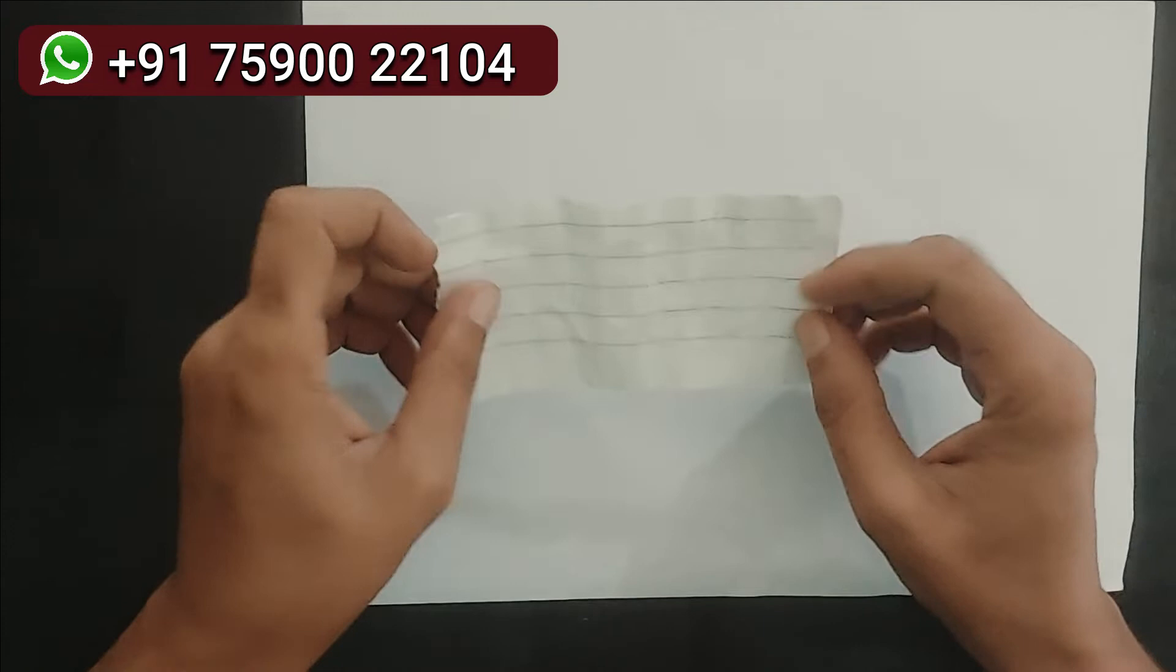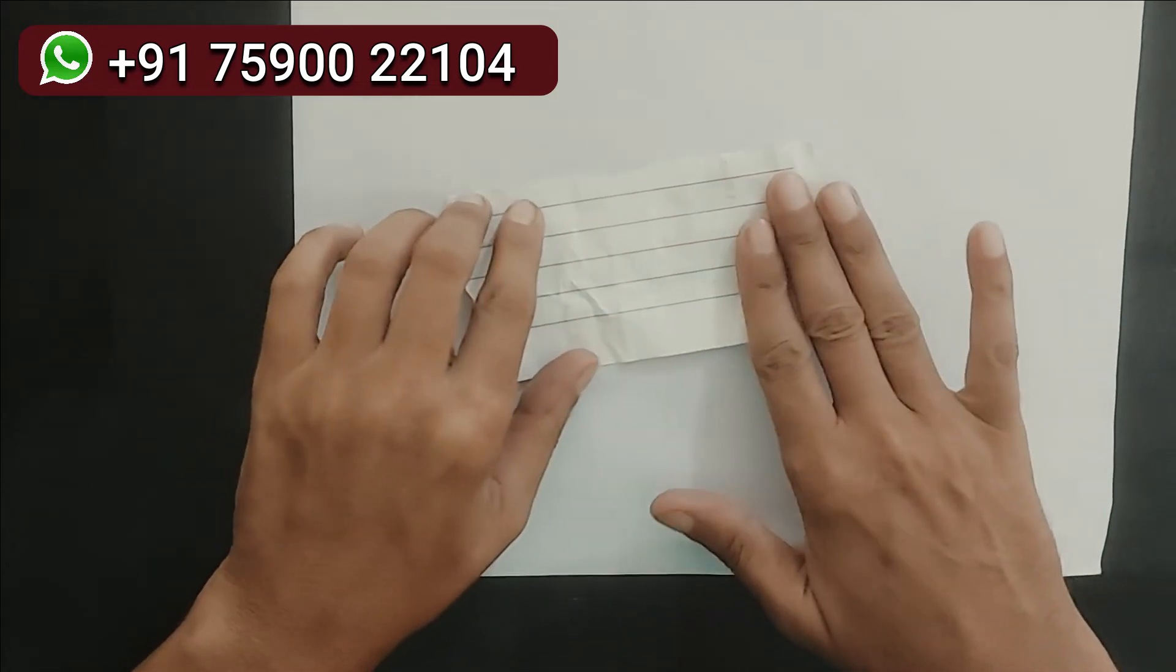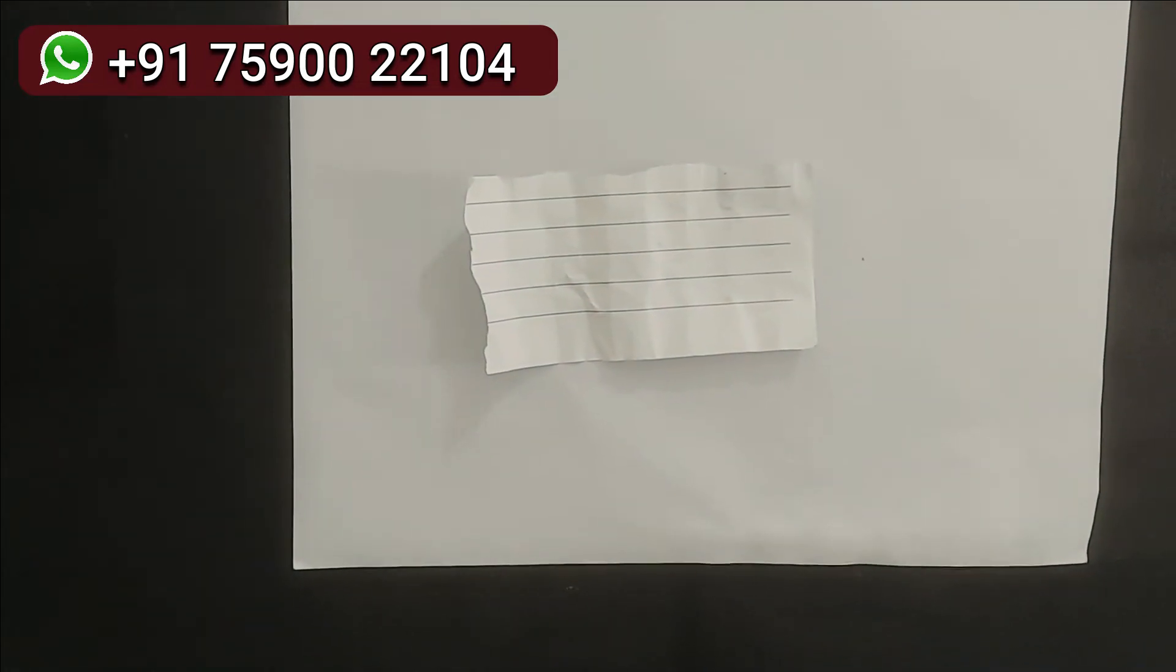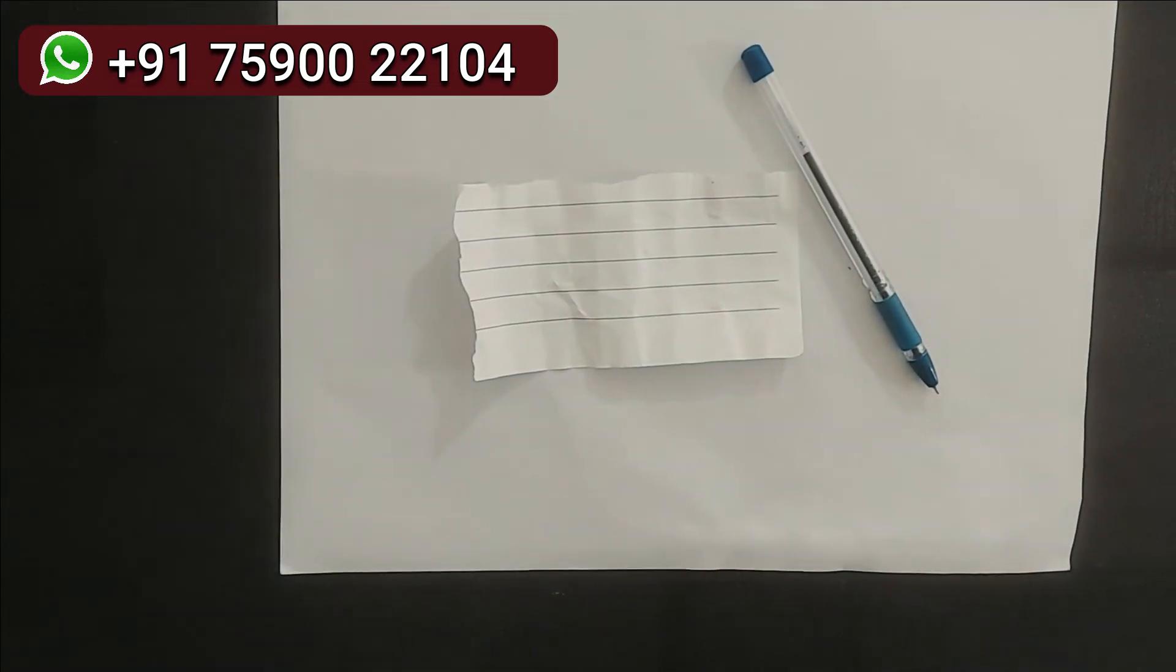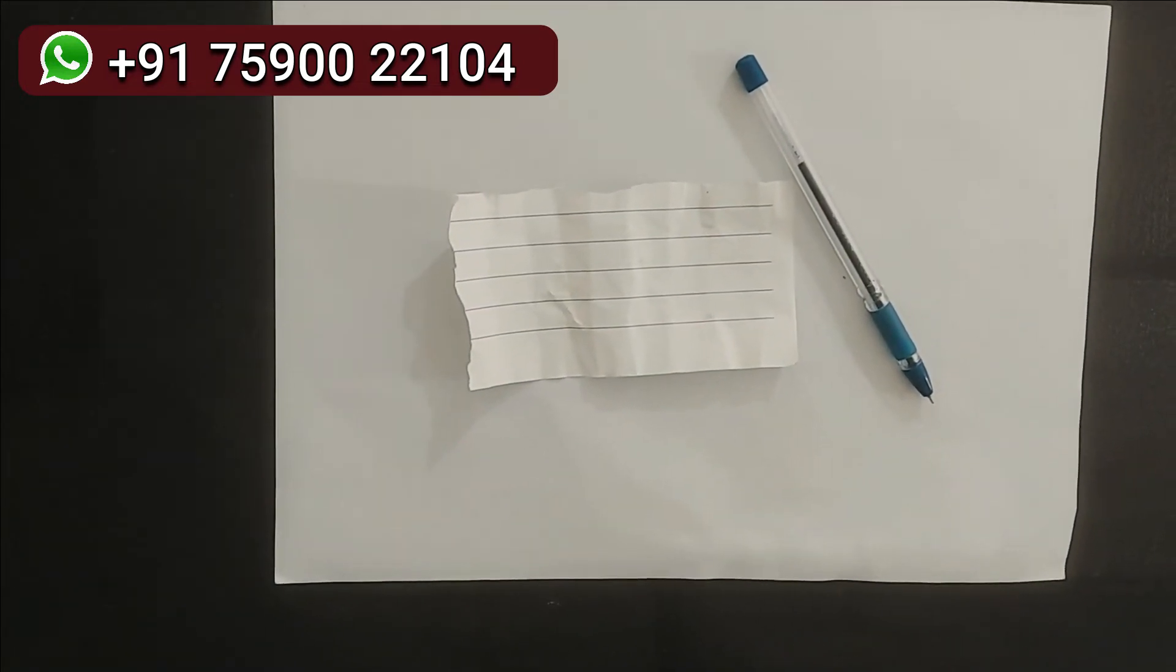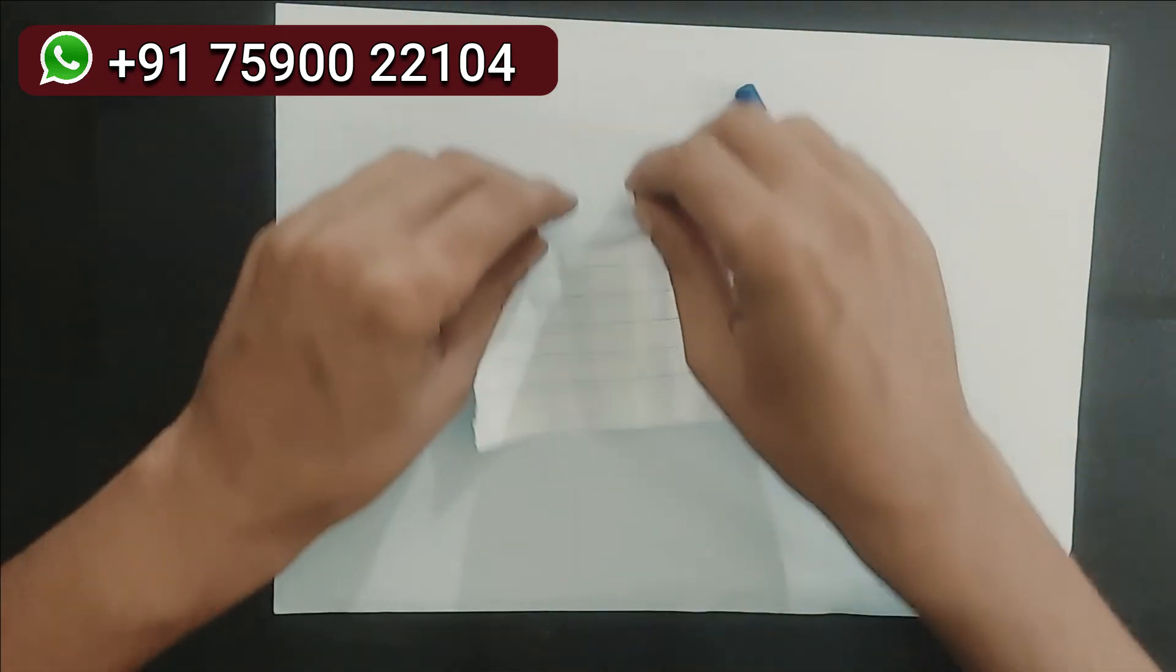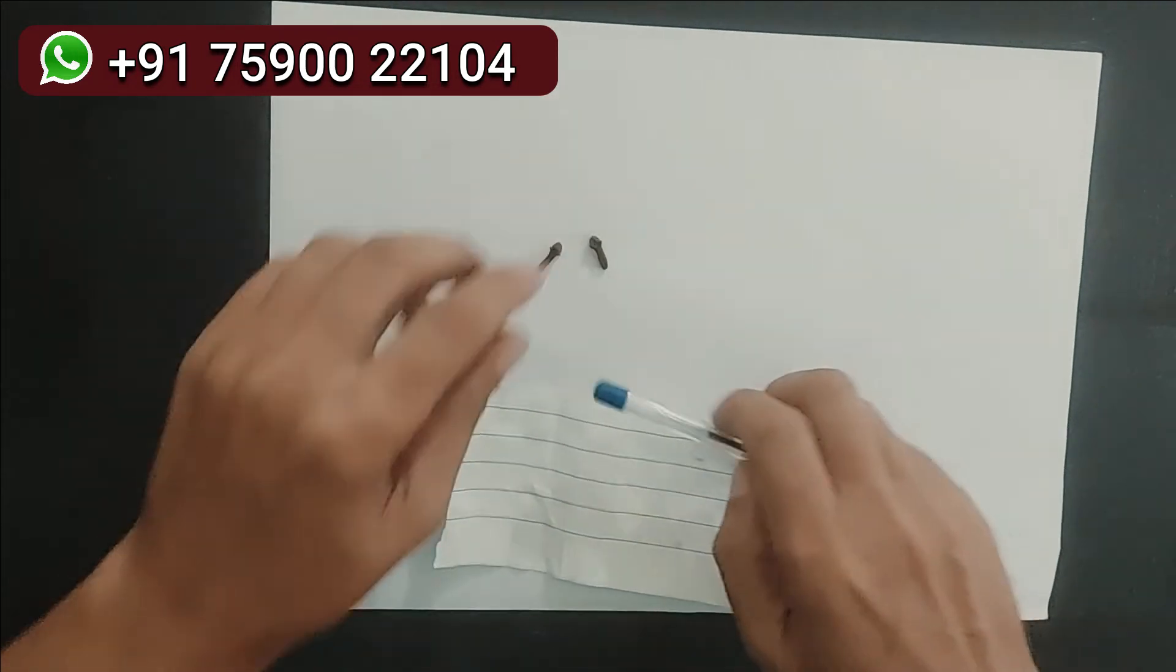You will need a piece of paper. You can see this, a piece of paper, and one pen. One pen. And two cloves. You can see two cloves over here. Two cloves.